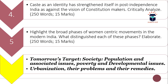The fourth question is: 'Caste as an identity has strengthened itself in post-independence India, as against the vision of constitution makers. Critically analyze.' You have to discuss caste as an identity and how it has evolved after independence. Word limit is 250 and maximum marks are 15.